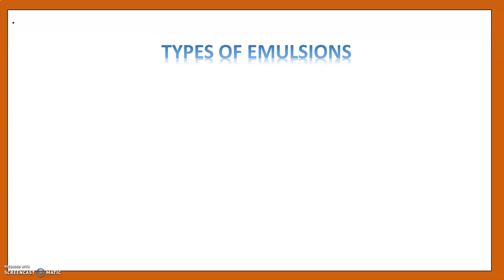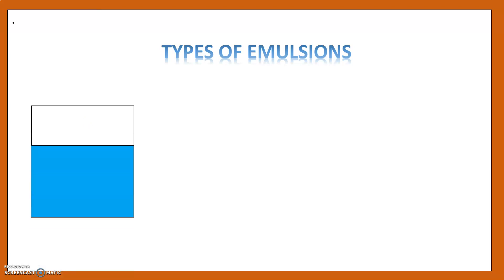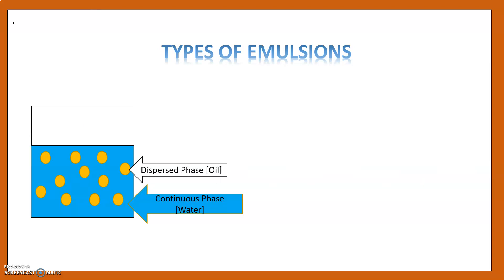Now let's see the different types of emulsions. There are two types: oil-in-water emulsion and water-in-oil emulsion. In the oil-in-water emulsion, the water is present in the continuous phase and the oil is present in the dispersed phase. Hence, it is called O/W emulsion.